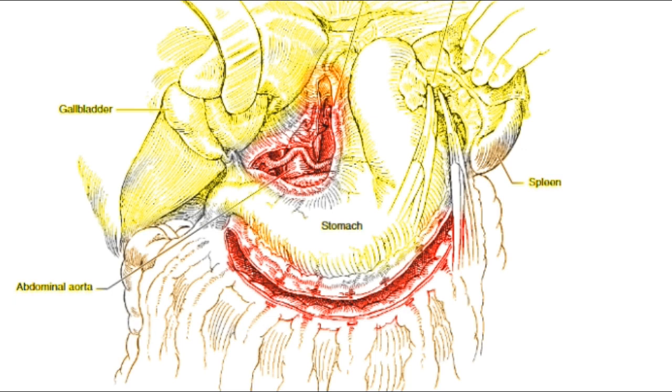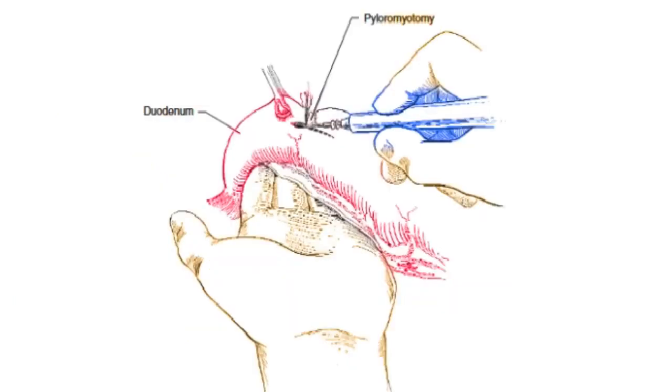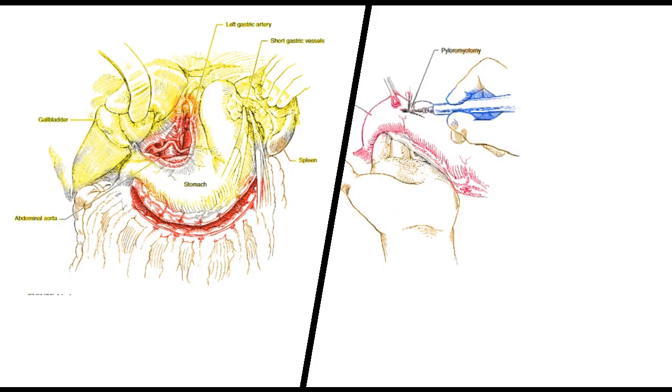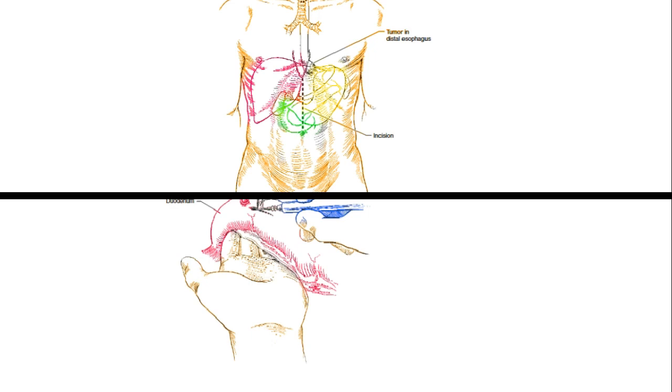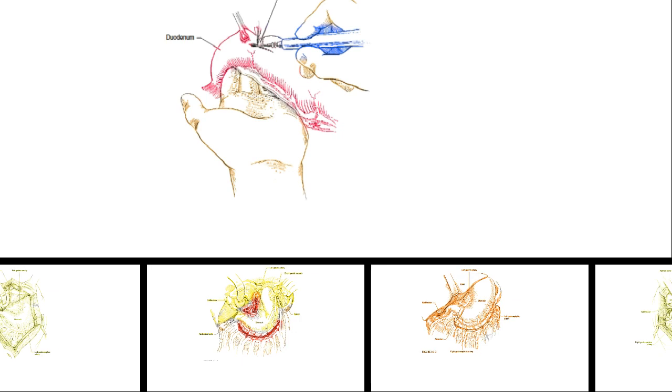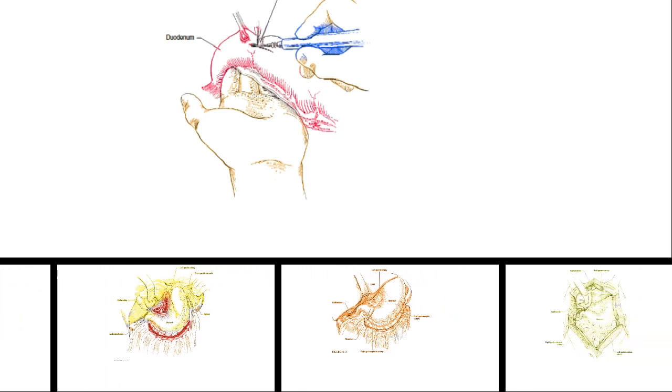Next, a pyloromyotomy is performed from 1 to 2 centimeters on the anterior gastric wall through the pylorus extending approximately 0.5 to 1.0 centimeters onto the duodenum. We prefer to use a fine-tipped hemostat and needle-tipped bovie for careful dissection of the stomach and duodenum muscular wall away from the underlying mucosa. The surgeon must ensure the mucosa has not been violated. If the lumen of the bowel has been entered, the mucosal defect is closed primarily and a Heineke-Mikulicz pyloroplasty is performed.